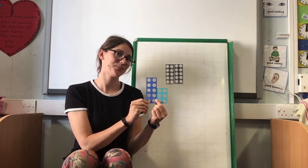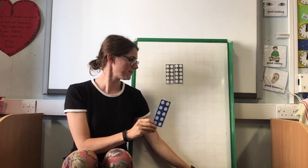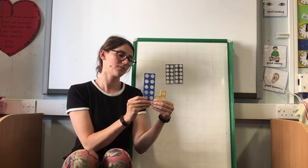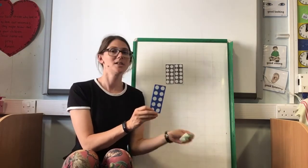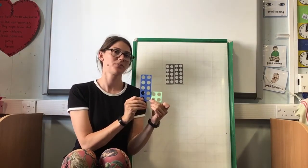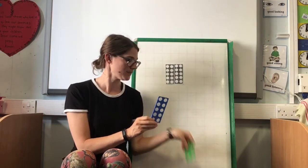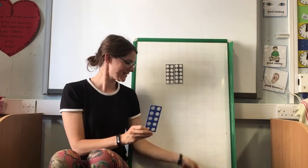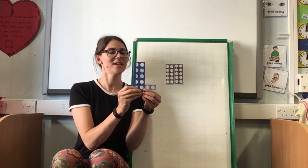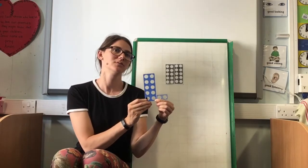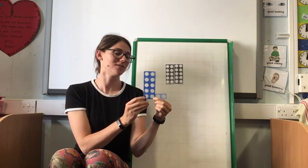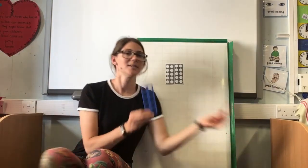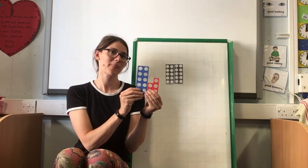10 and a 6 — that's 16. 10 and a 3 — 13. 10 and a 4 — 14. 10 and an 8 — 18. There's a tricky one: 10 and a 2 — 12. 10, 11, 12. Well done. 10 and a 5 — 15. Good.